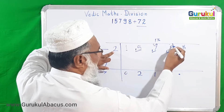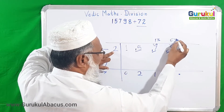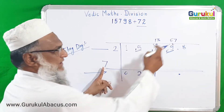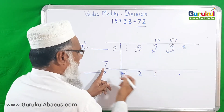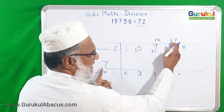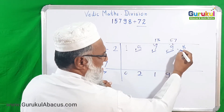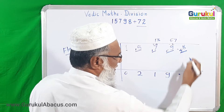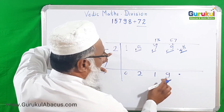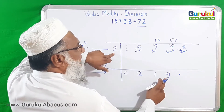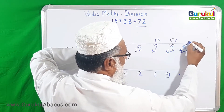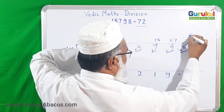Now we have 67 and divisor 7. 7 nines are 63, which is suitable, so we take 9. Subtracting 63 from 67 gives remainder 4. Carrying forward gives 48. Before proceeding, we subtract the product of the answer digit 9 and flag digit 2: 9 times 2 is 18. Subtracting 18 from 48 gives 30.